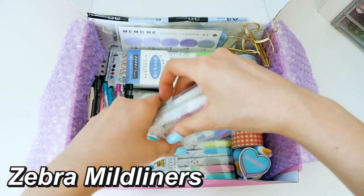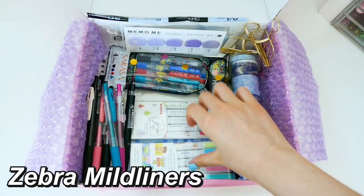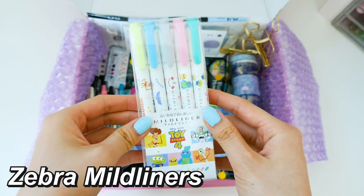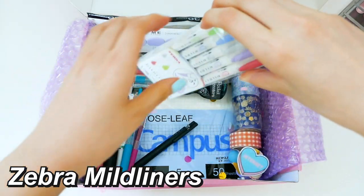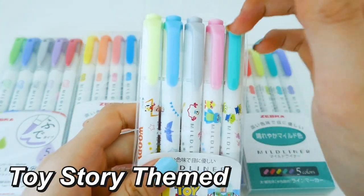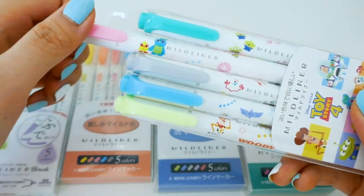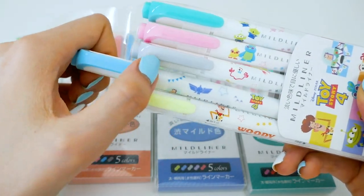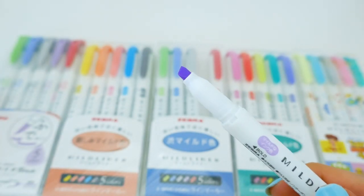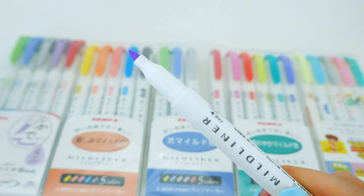Next are the Zebra Mildliners. I absolutely love these highlighters if you know me. And then I also got this limited edition Zebra Mildliner Toy Story pack and the Zebra Mildliner brush pens in the cool color. These are really cool limited edition Toy Story themed Mildliners. I thought these were really cute and I couldn't resist buying them.